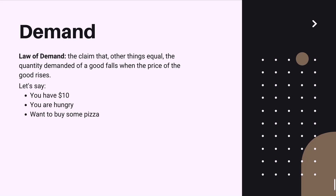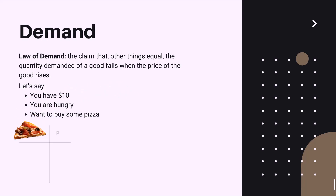Let's understand this with a real-life example. Say you are hungry, you have $10, and you want to buy pizza. At a price of $10, you spend all your money on one slice. At $5, you can buy two slices. At $2, you can afford five slices and, being very hungry, you would most probably buy all of them.